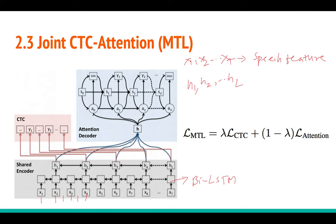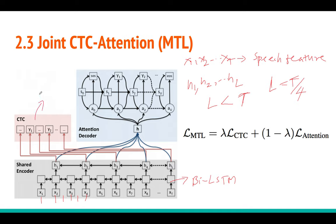You can ask: since the bi-LSTM takes every input and produces one output, why is L not the same as T? They do some subsampling — they don't use all time step outputs; they use something like every three frames, taking one frame. So L will always be less than T; in fact L equals T divided by 4, as we will show later. The CTC head is the same old deep speech model, which takes the hidden representation and keeps predicting characters and underscores, collapsing everything into a sequence of characters and then words.